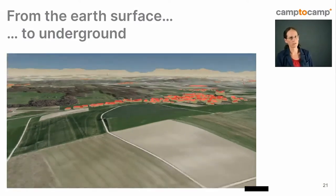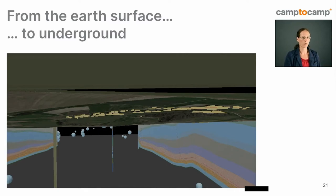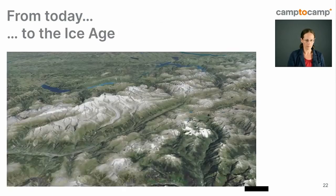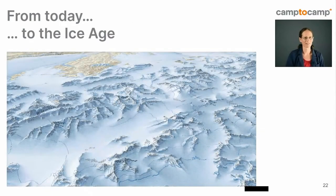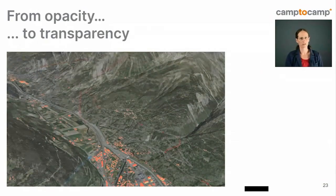From the earth surface you can flip to the underground view at the same location and discover many more things: cross-sections, boreholes, building footprints, and earthquakes from the last 90 days or older significant earthquakes. You can also show different layers — for example, traveling back to the ice age to see how the Alps looked, including full ice coverage.